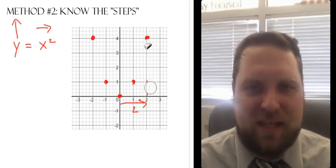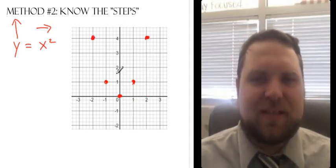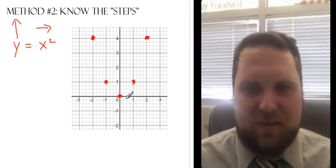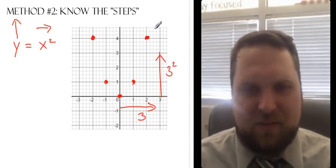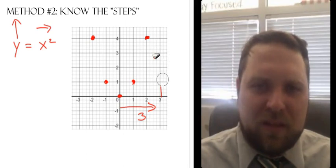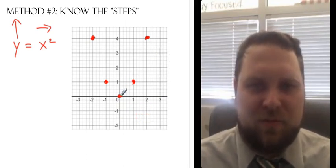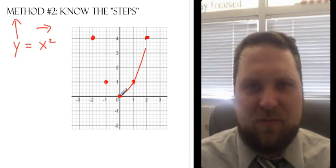And by doing this, I can, even though I don't have room on this graph, I know where it would be at three as well. If I went over three, I would go up by three squared, which is nine. So my next point, I'd go over three, and then I'd go up to nine, which would be way off the screen, somewhere up there. So you can use that step to create your points. And once you have your points, you can graph them.